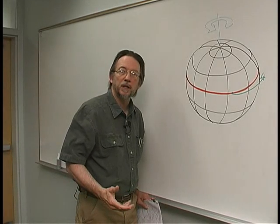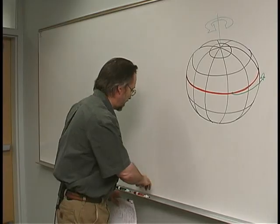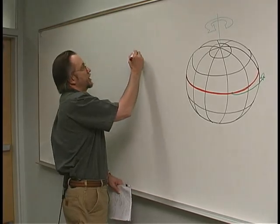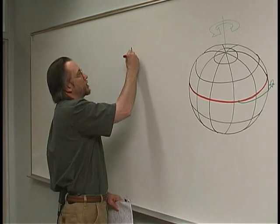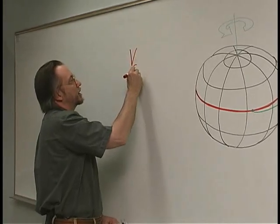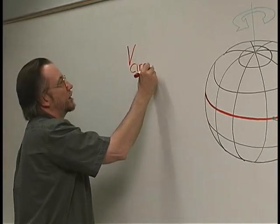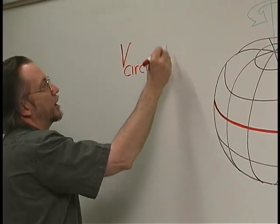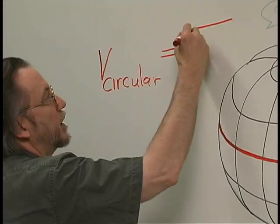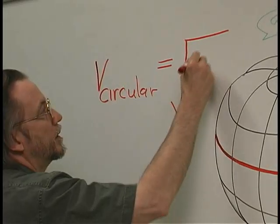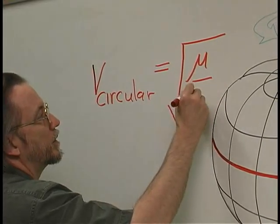Let's consider the speed that we need to get a spacecraft into circular orbit. The equation for the circular speed is the square root of mu over r.